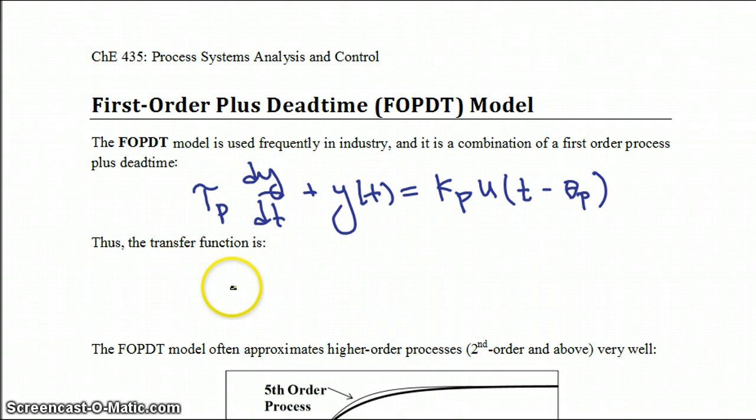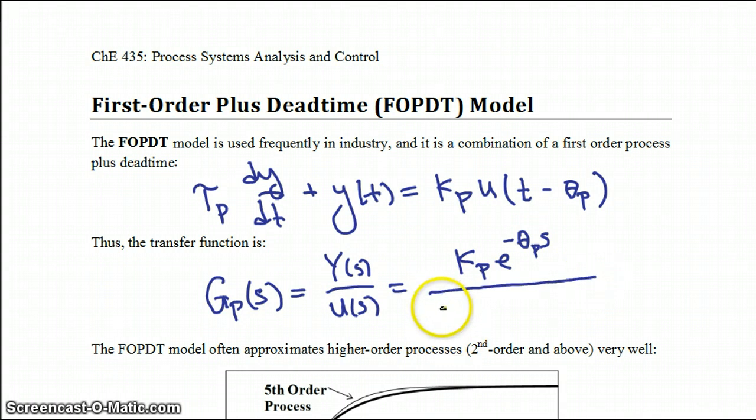Therefore, the transfer function of this equation would be for your process being the ratio of Y(s) to U(s) equal to your process gain times the Laplace transform of your delay time divided by the same denominator you would get in just a regular first order model.